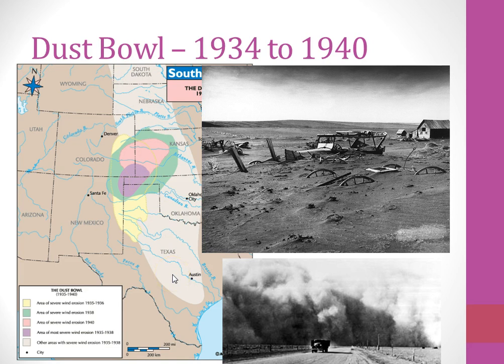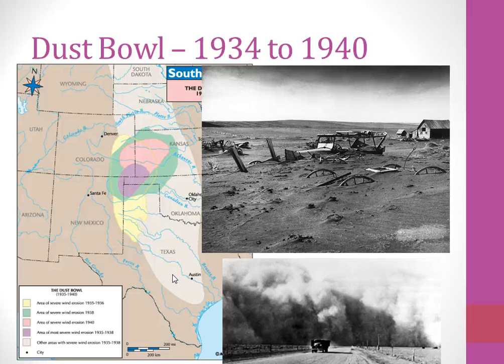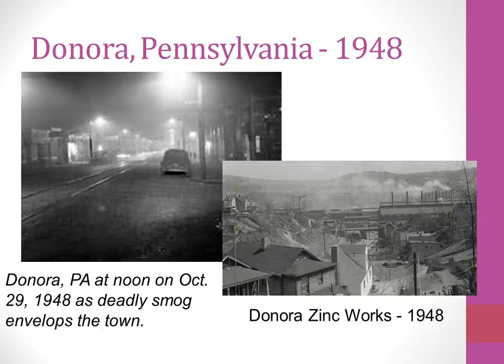This is our bread basket — the area of America where most of our food is produced. This, combined with the Great Depression, led to a lot of problems, but it also led to significant changes in soil conservation practices, even resulting in laws requiring farmers not to leave their soil barren during the offseason, because this is exactly what happens with drought and excess wind.